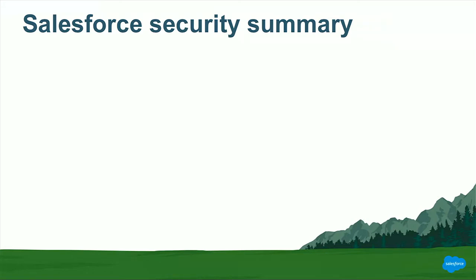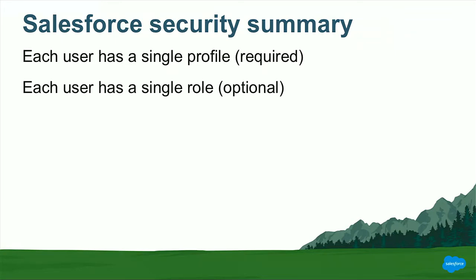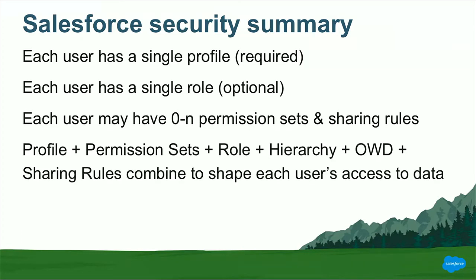A quick summary of the landscape of security controls for Salesforce: every user has a profile, and every user must have a profile — users can only have one profile. Every user can have a single role, but roles are optional; in an org of any size, though, you're probably going to want to use roles. Each user can have any number of permission sets from zero to whatever number you want to assign to them, and the same goes for sharing rules. The combination of profile plus permission sets, roles and role hierarchies, org-wide defaults, and sharing rules all combine to shape each individual user's access to data.